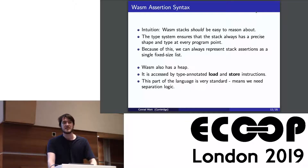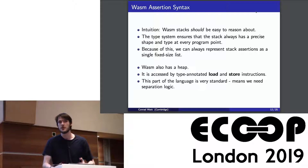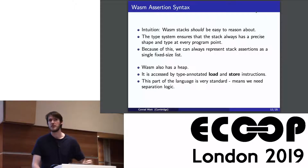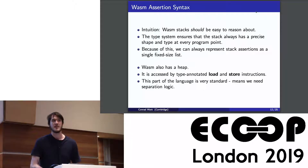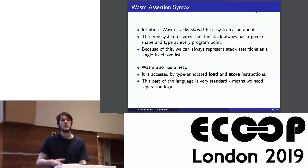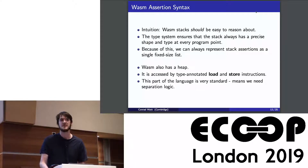Intuitively, WebAssembly stacks should be quite easy to reason about. We have a lot of structural information from the types, so we don't need to worry about cases where one branch of an if pushes two things and another pushes three — the type annotation constrains that both paths must push exactly the same number. Because of this, we can always make our assertions about the stack just a fixed-size list, which makes the structure of assertions and reasoning a lot easier.